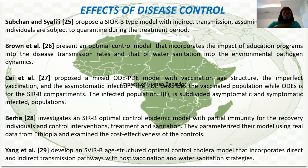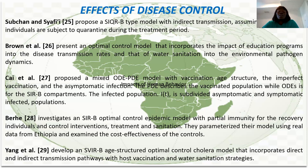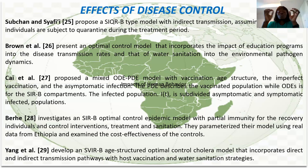Many of these models do not consider partial immunity, even though a person who has recovered from cholera can still become infected again. Work by Berhe (reference noted) considered partial immunity upon recovery and also considered control strategies including treatment and sanitation. Their work was validated using data from Ethiopia, and they assessed the cost-effectiveness of those controls — comparing treatment versus sanitation and which gives better results.